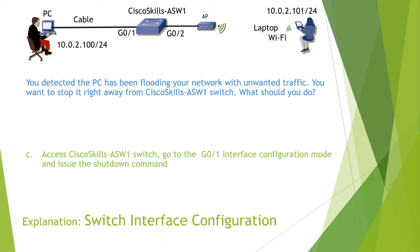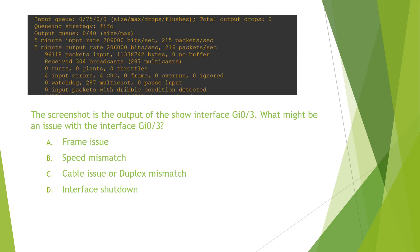Switch interface configuration. The question reads: the screenshot is the output of the show interface G03 command. What might be an issue with interface G03? From the output, we notice that there are 4 CRC errors. The CRC errors counter increasing usually means a cable issue or duplex mismatch. So the answer for this question is C.